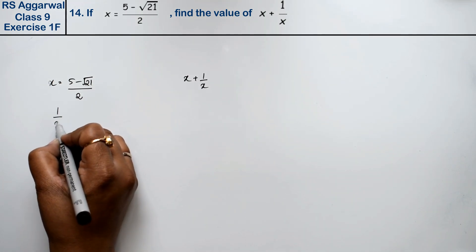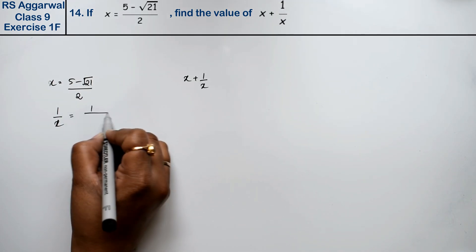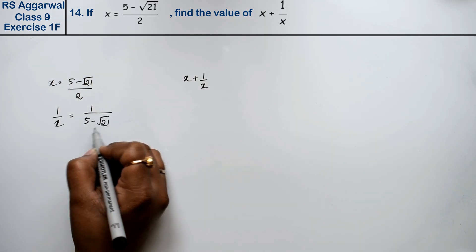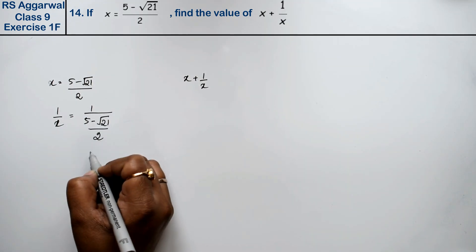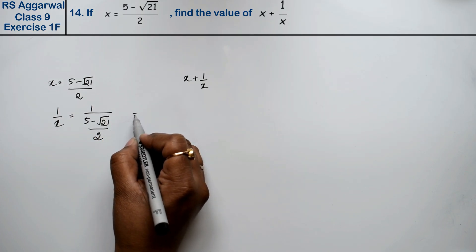To find the value of 1/x, we take 1 divided by (5 - √21)/2. The 2 will move to the numerator, so this becomes 2/(5 - √21).